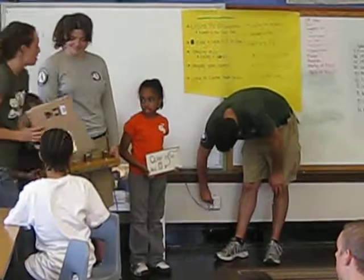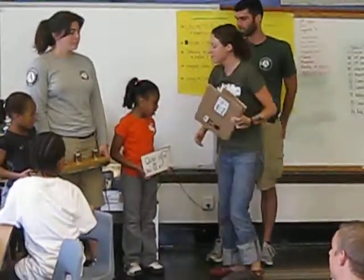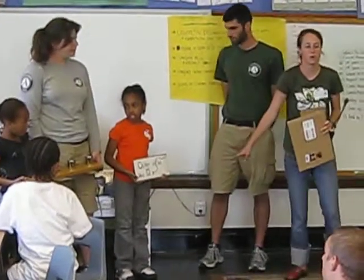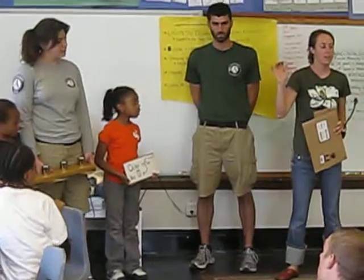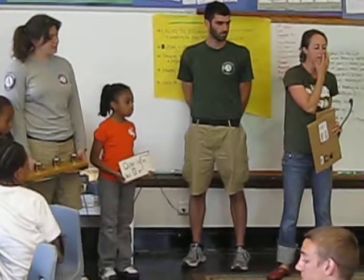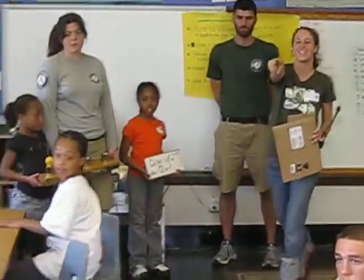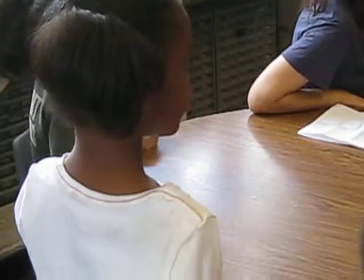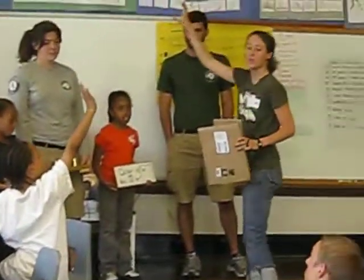Our light didn't turn on, though. It didn't turn on because the electricity doesn't just come from the wall, right? Is all our electricity just kept in our wall? No. Where does it come from before it's in the wall? Back here — that's a good guess, but it comes from somewhere right outside the wall.